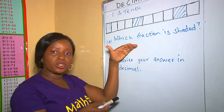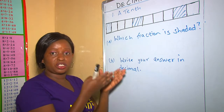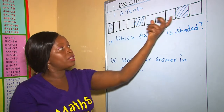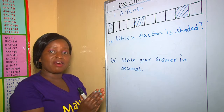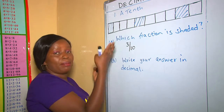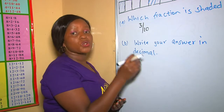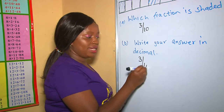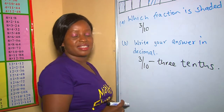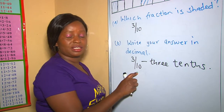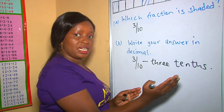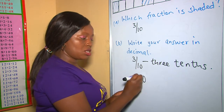In this question, we are supposed to write the shaded part as a fraction of the total. Three parts have been shaded out of all the parts, and all the parts are ten. So as a fraction it is three out of ten. Before writing it as a decimal, first write the fraction in words — that is 'three tenths.' Three tenths as a decimal is 0.3, because after the decimal point on the right the place value is tenths.